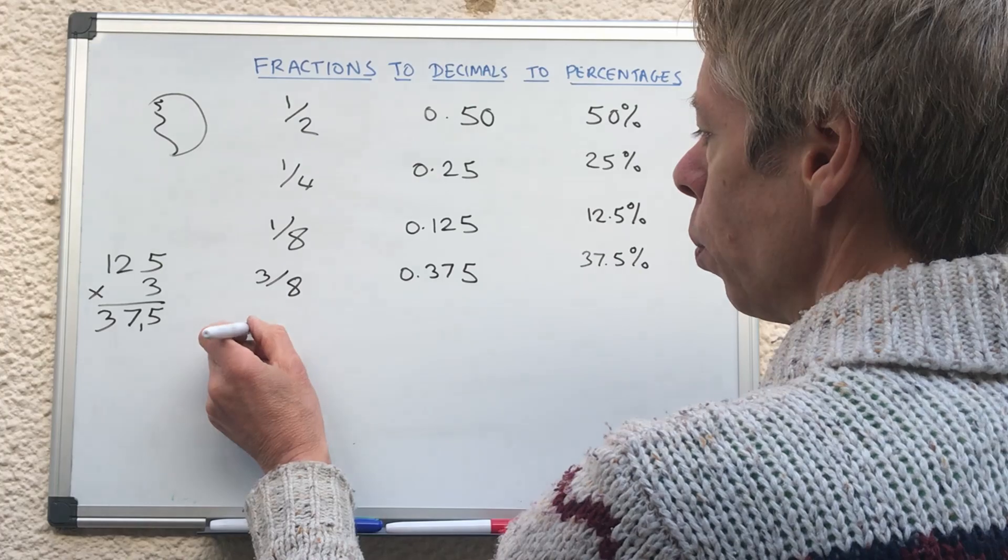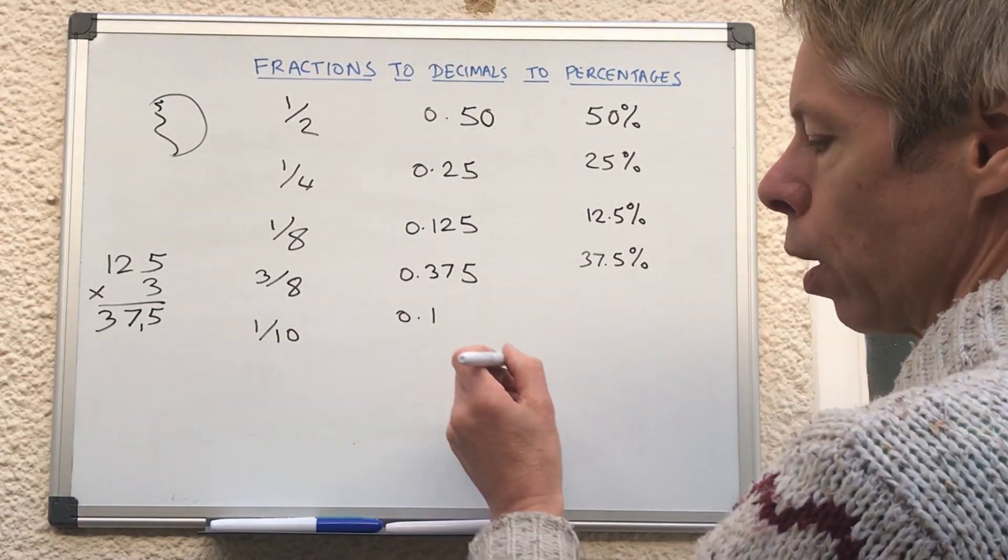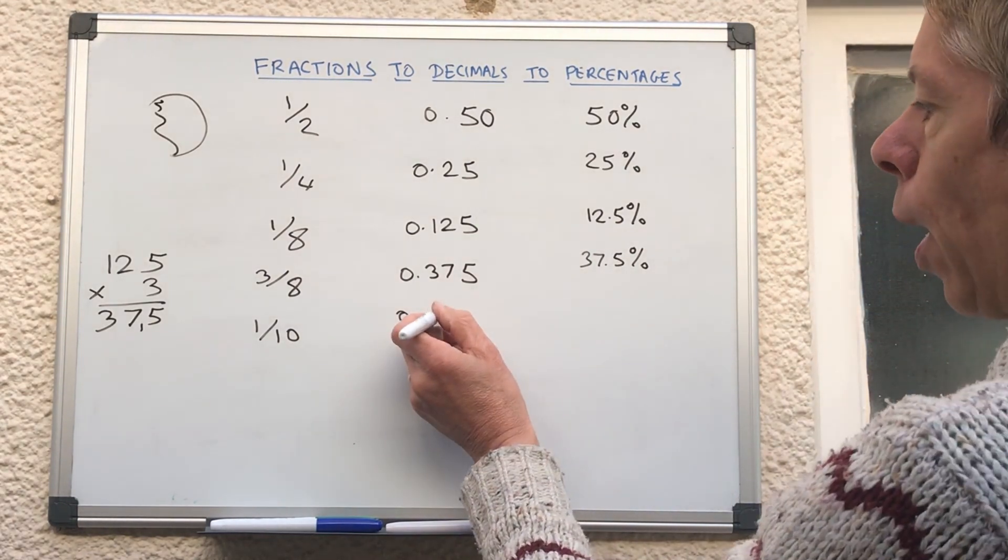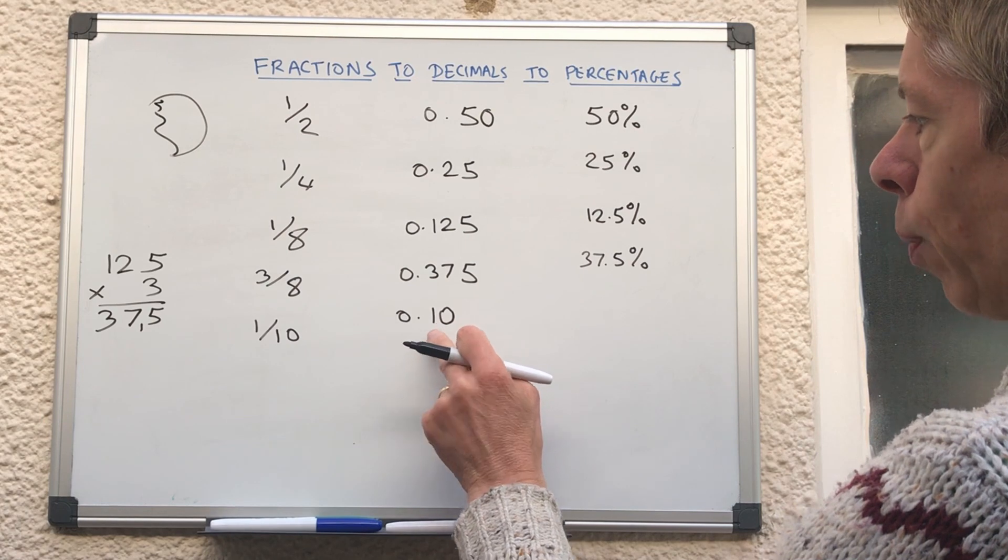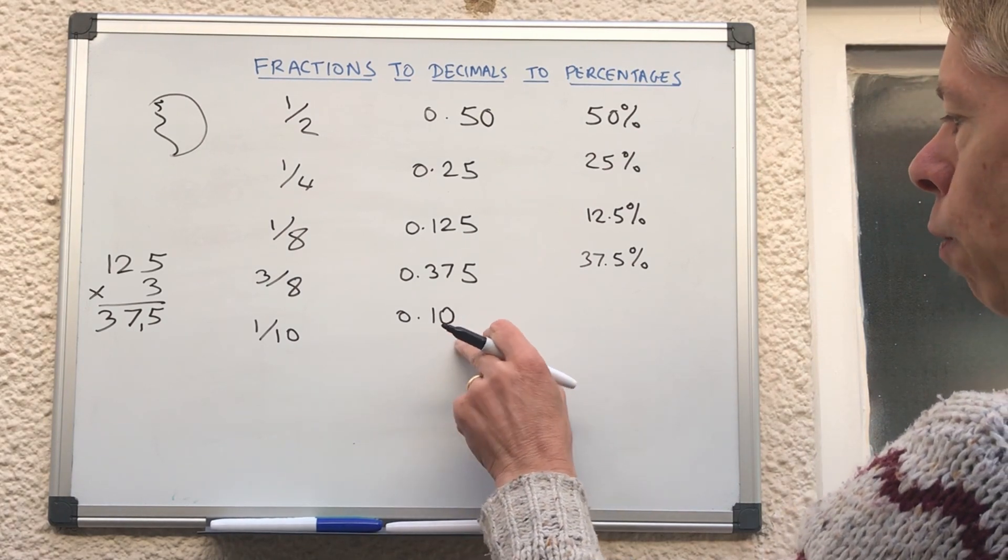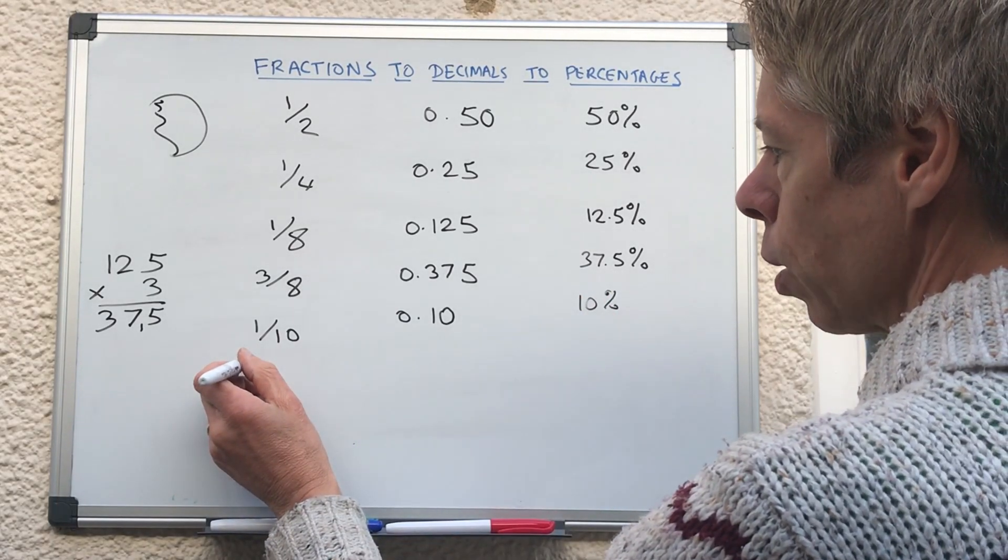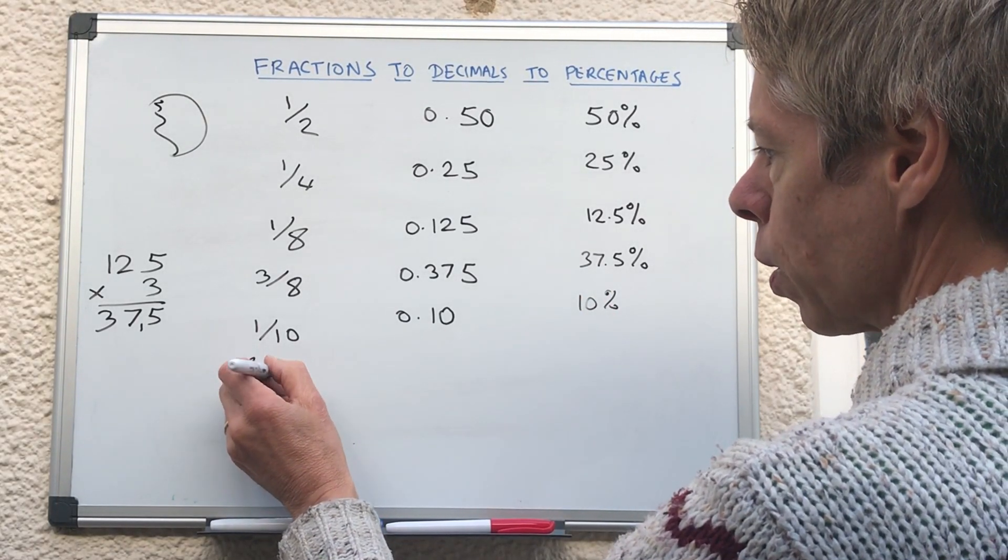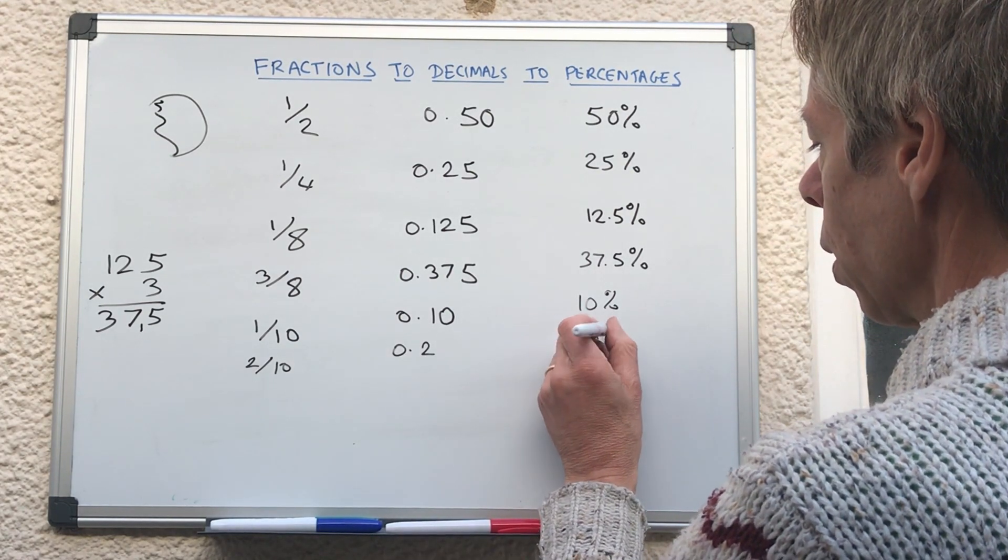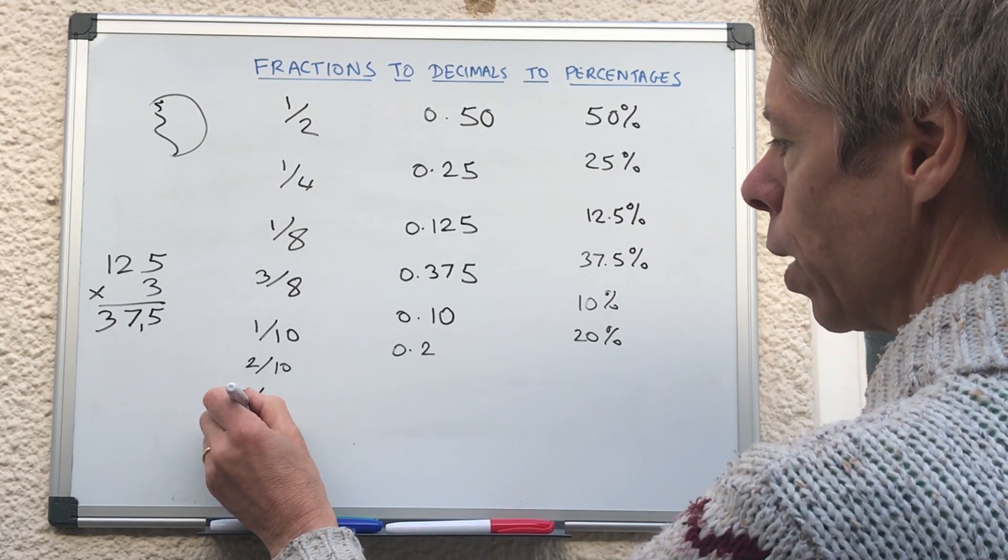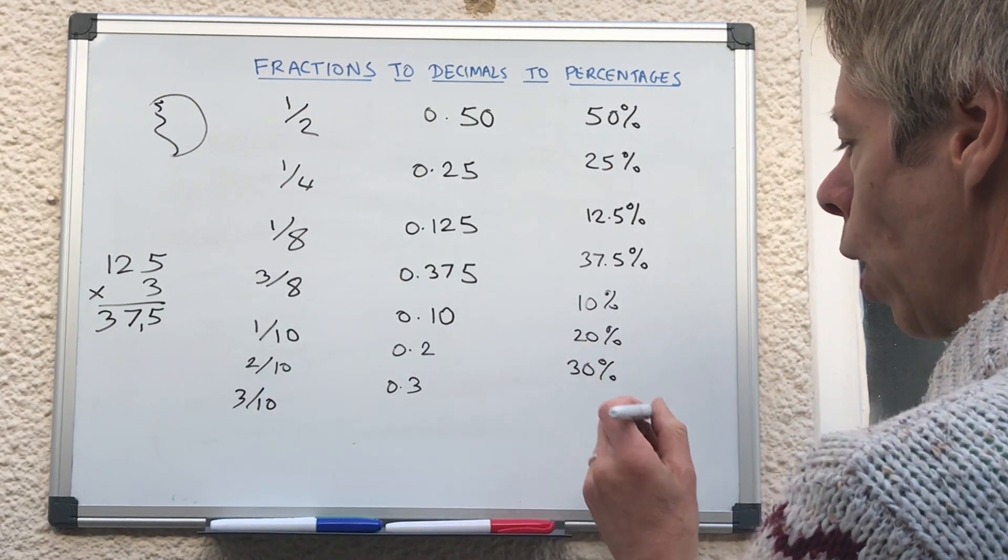So probably know that one tenth is 0.1. So if we put another zero there, still the same value, I would just put it at 0.1, but just helping us to work out that first two decimal places, that is 10%. So easy enough to say that, well, two tenths must be 0.2, and that must be 20%, and then three tenths must be 0.3, which must be 30%.